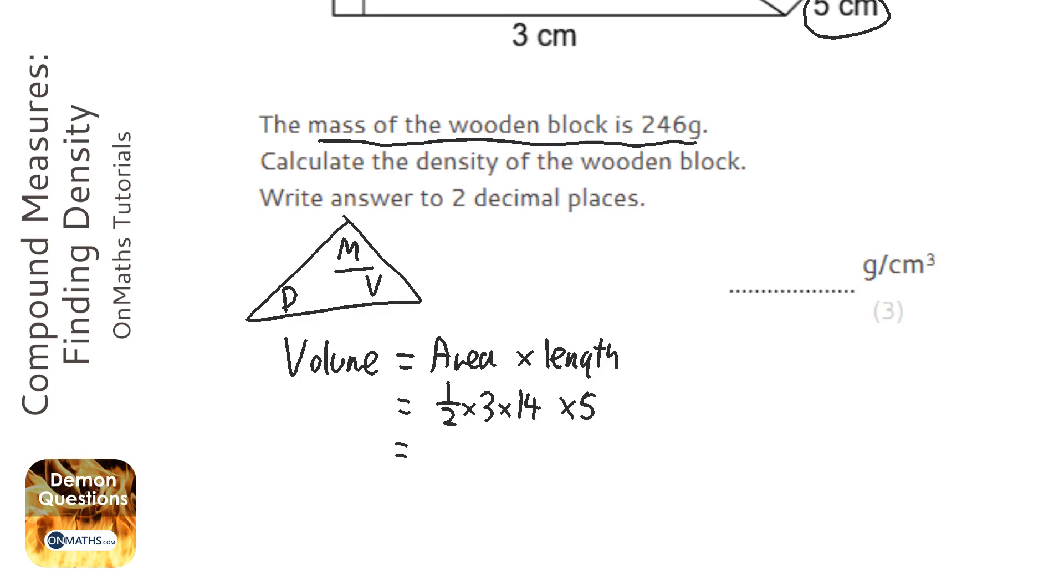I'm going to type that into my calculator: 0.5 times 3 times 14 times 5, and I get the answer of 105.